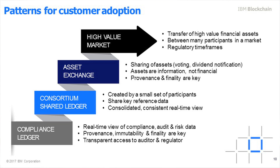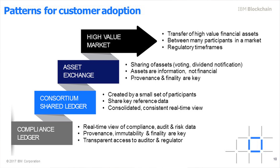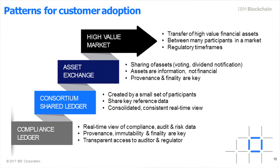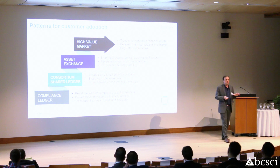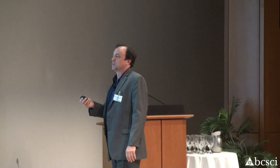IBM identified four use case areas you can focus on today within your company. The first is high-value markets, referring to financial organizations and the finance side — that could also include your audit department at a company like Monsanto or Boeing. The second is asset exchange, which applies to firms like Edward Jones dealing with dividend notifications. Third is consortium shared ledger, which is perfect for food safety and supply chain — when you get a group together in a consortium. Fourth is compliance, covering audit and risk, such as Deloitte leveraging that use case.